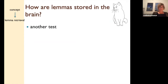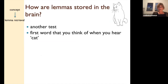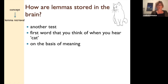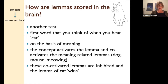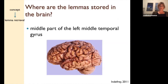So, how are lemmas stored in the brain? Let's do another small test. What's the first word you think of when you hear 'cat'? A good guess is that you do that on the basis of meaning and that it is something like 'dog.' That means the non-verbal concept activates the lemma and co-activates the meaning of related lemmas, like dog and mouse. Then these co-activated lemmas are inhibited and the lemma of 'cat' wins. That's how you select the lemma — the idea in psycholinguistics, think of Levelt, Garrett, etc.